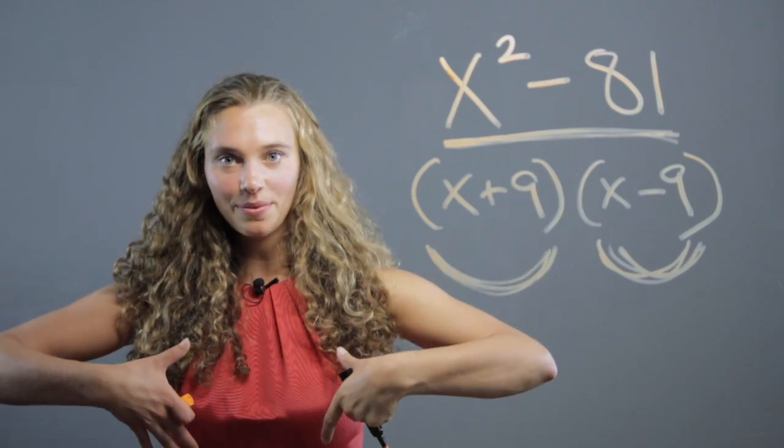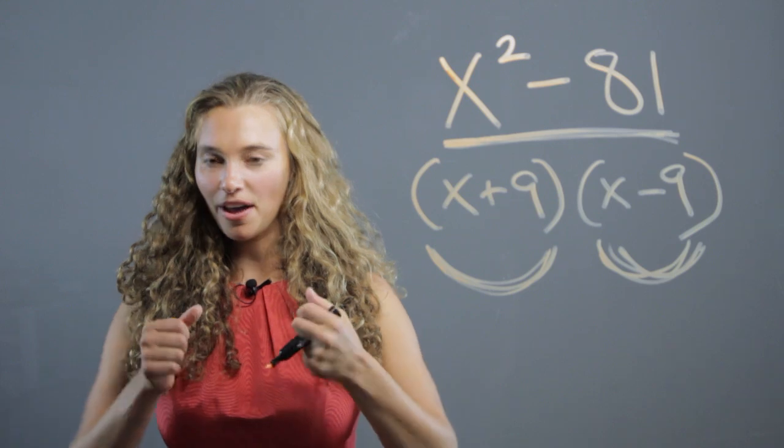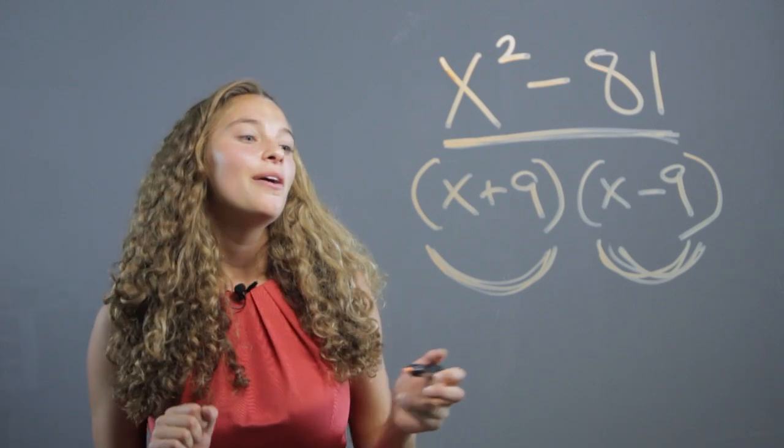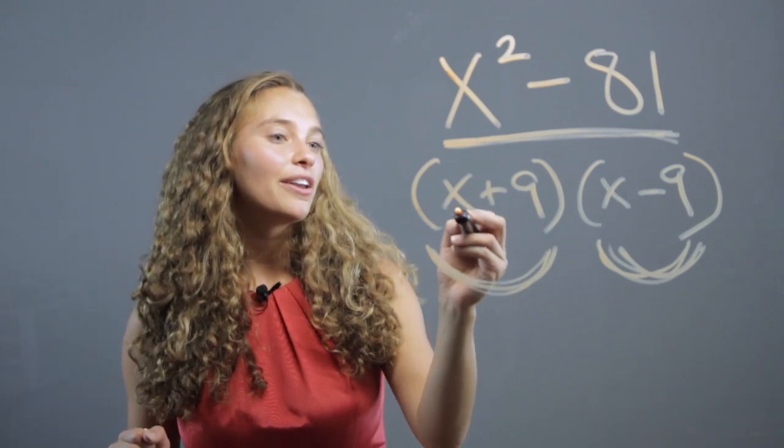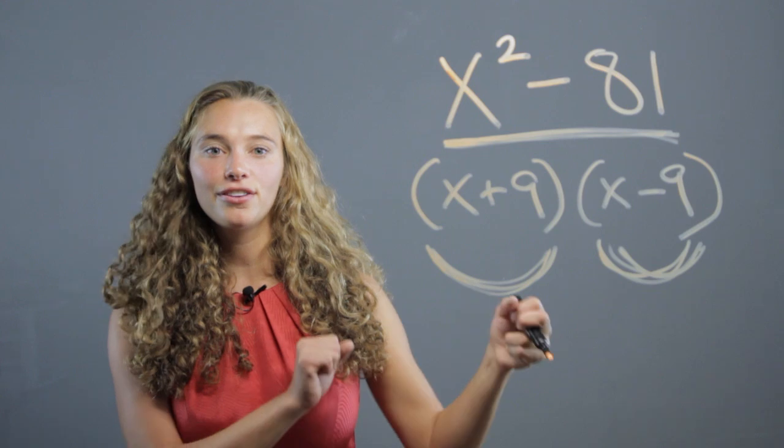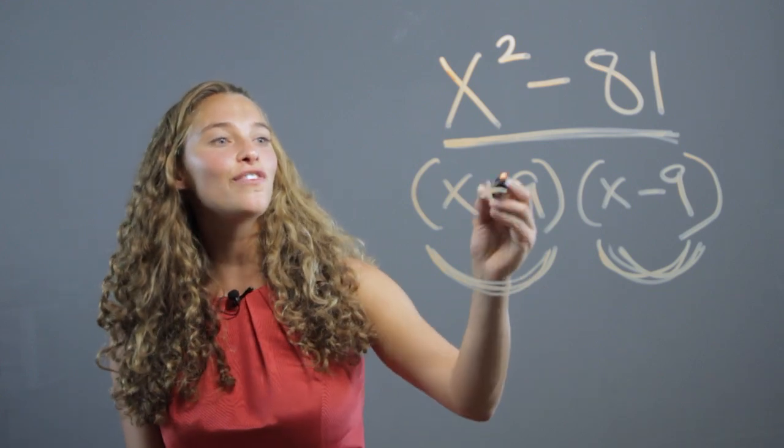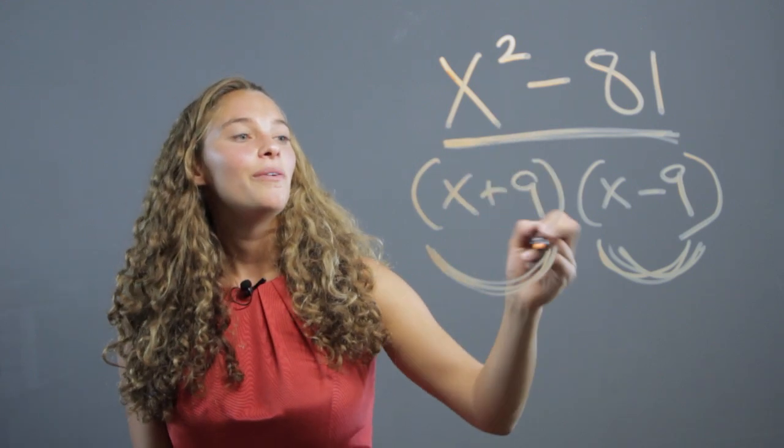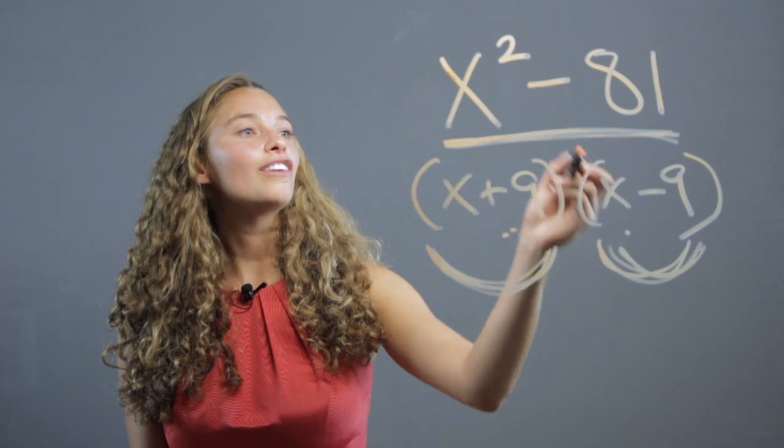So they'll have x squared minus 81 written on a piece of paper that they can hold up, whereas the other students can hold up x plus 9, and another student can hold up x minus 9, and they have to form a group of three with the two factors from the polynomial.